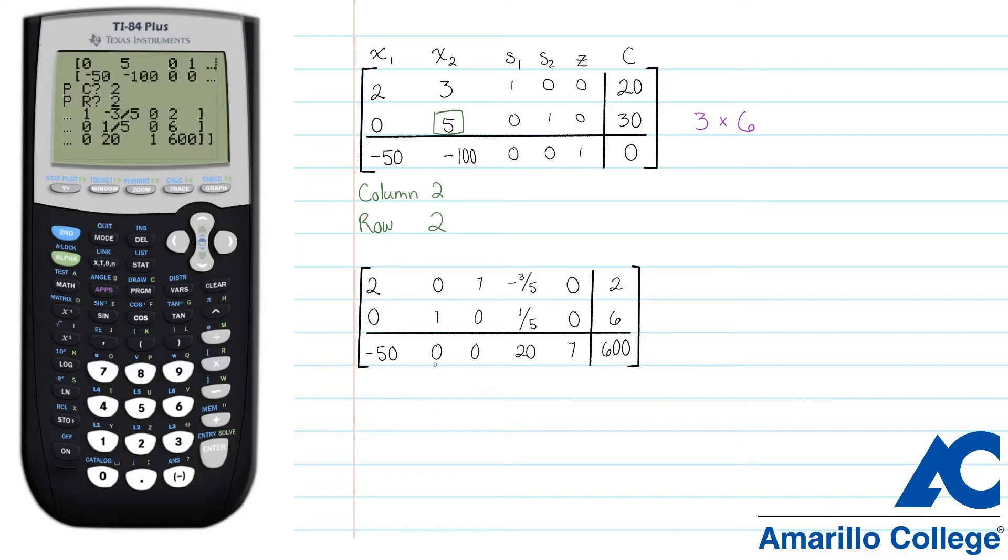The bottom row, called the indicator row, has a negative number in it. This tells us that our matrix is not optimized and our problem is not finished. We have to pivot again starting from this matrix. Our second pivot location is this element here in the top left. Its column is one and its row is one, which we will write down.